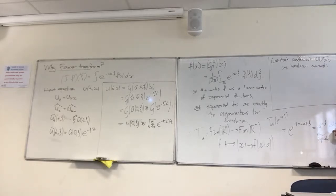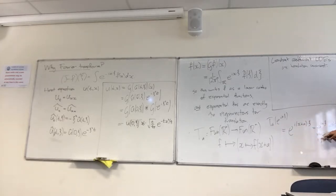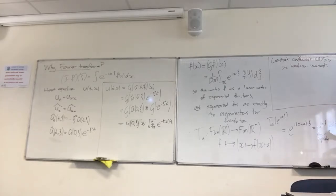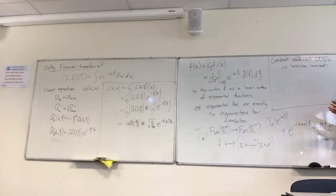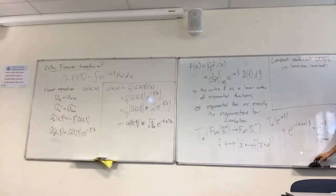Notice that these e^{iXξ} are simultaneously eigenvectors for every different T_a — they have different eigenvalues for each T_a, but they're simultaneous eigenvectors for the entire group of translations. So this is the fundamental idea: you're studying some system, it's got some group action on it, so you want to decompose the space of solutions into things that are particularly easy to understand relative to that group action.